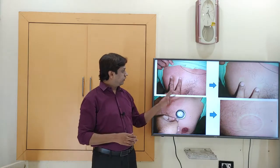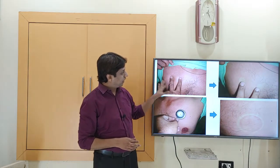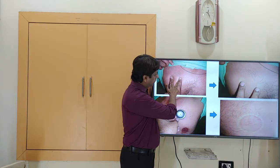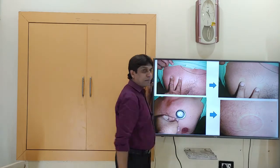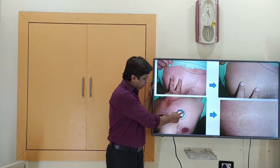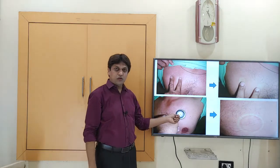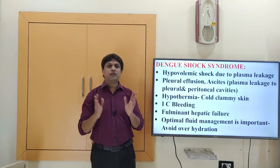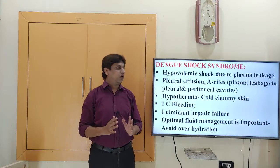The impression sign can also be observed: when two fingers or the diaphragm of a stethoscope is pressed on the skin and removed, a pale impression is visible. These are the signs of Dengue hemorrhagic fever.